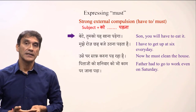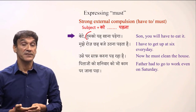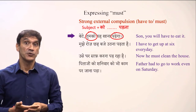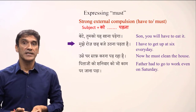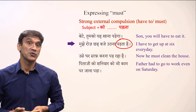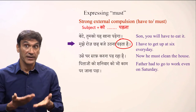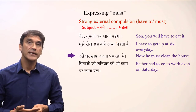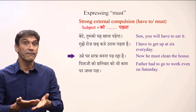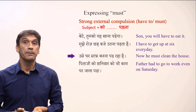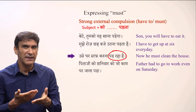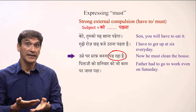Let's take some examples. 'Son, you will have to eat it' — here the subject is with the postposition ko and parna is in future tense. 'I have to get up at six every day' — here the verb parna is in present habitual tense, meaning the compulsion is regular and happens habitually. 'Now he must clean the house' — precisely, he is being forced to clean the house; here parna is in present continuous, expressing ongoing forced compulsion.